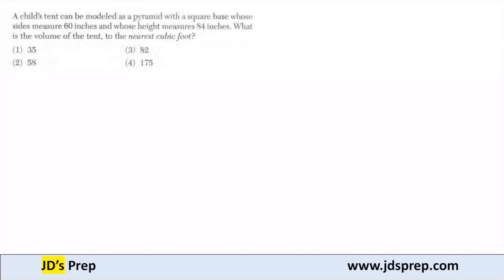Hello, welcome to JD's Prep. In this example, a child's tent can be modeled as a pyramid with a square base whose sides measure 60 inches and whose height measures 84 inches.